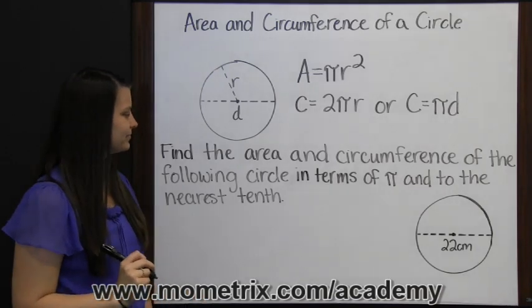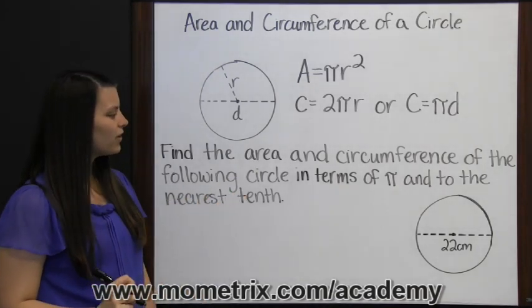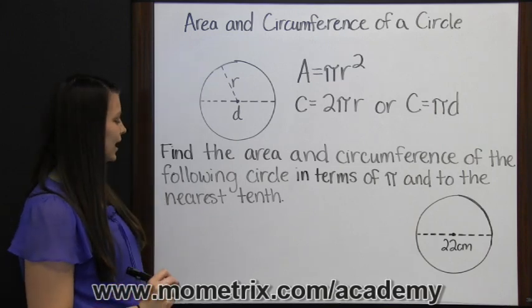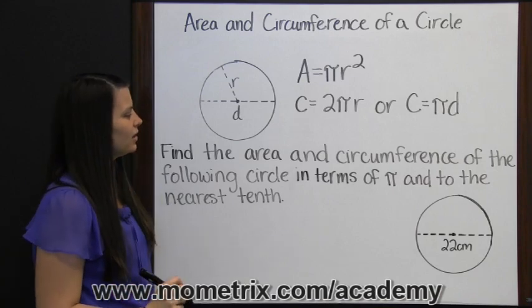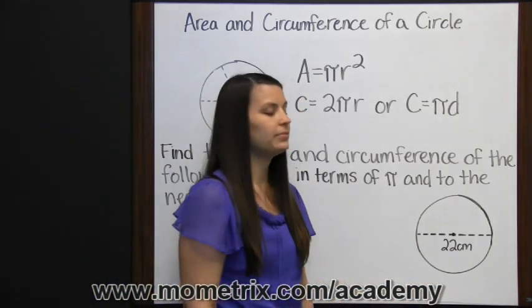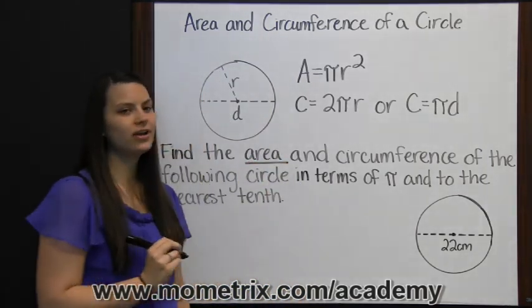Let's look at an example. Find the area and circumference of the following circle in terms of pi and to the nearest tenth. In our example, all they've given us is the diameter, but that's all we need to find our area and circumference.